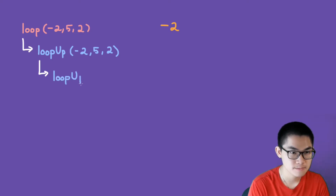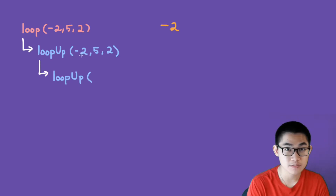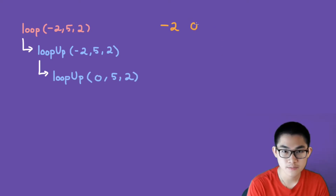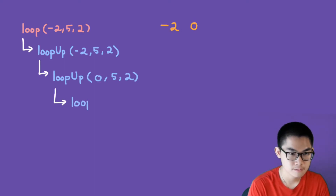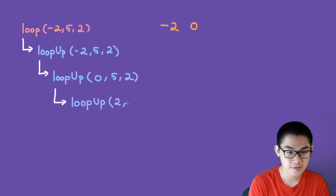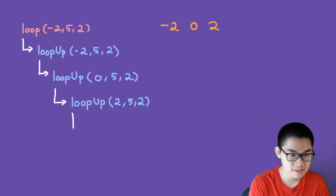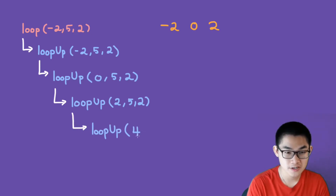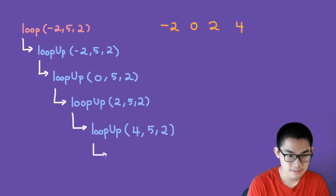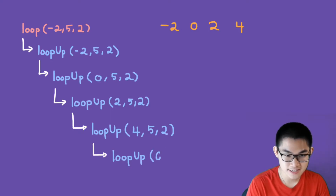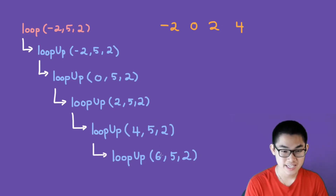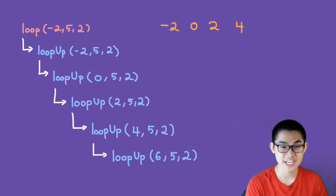Then we will do the same thing since this is recursion, so it calls itself. We have loop up, and since it is increasing by 2, then negative 2 becomes 0. The rest stays the same, and the computer will print out number 0. Then we repeat the recursion: 0 plus 2 is 2, rest stays the same, we print out number 2. Then 2 plus 2 becomes 4, rest stays the same, we print out number 4. Finally, 4 plus 2 is 6 — and since 6 is larger than 5, this is where we stop. The final answer prints out negative 2, 0, 2, and 4.